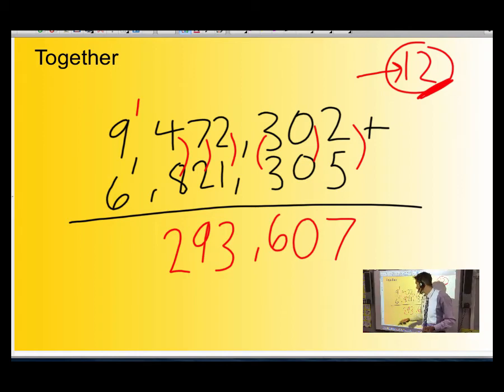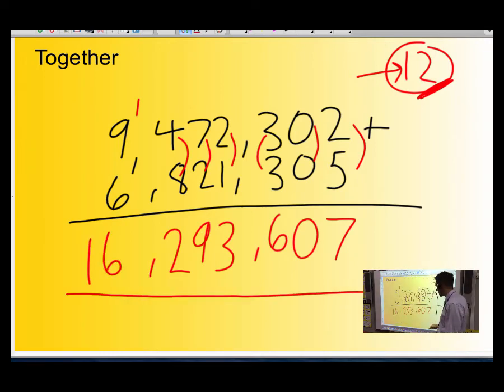1 plus 9 plus 6 is what? Pause me. Work it out. Okay, that equals 16. So the answer should be 16,293,607. We've done one together. It's time for you to try one by yourself.